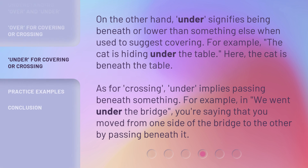On the other hand, under signifies being beneath or lower than something else when used to suggest covering. For example, the cat is hiding under the table — here, the cat is beneath the table. As for crossing, under implies passing beneath something. For example, in we went under the bridge, you're saying that you moved from one side of the bridge to the other by passing beneath it.